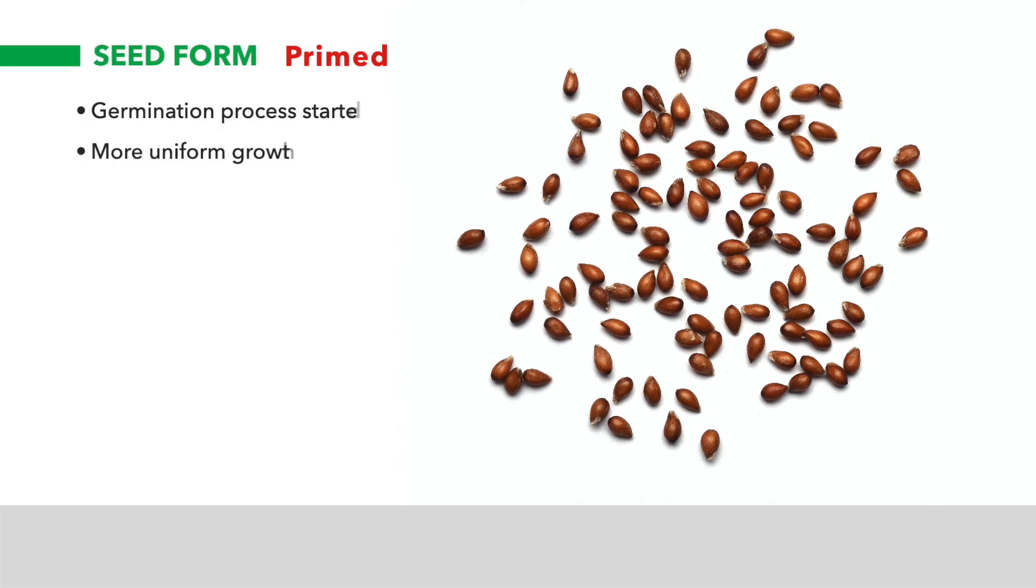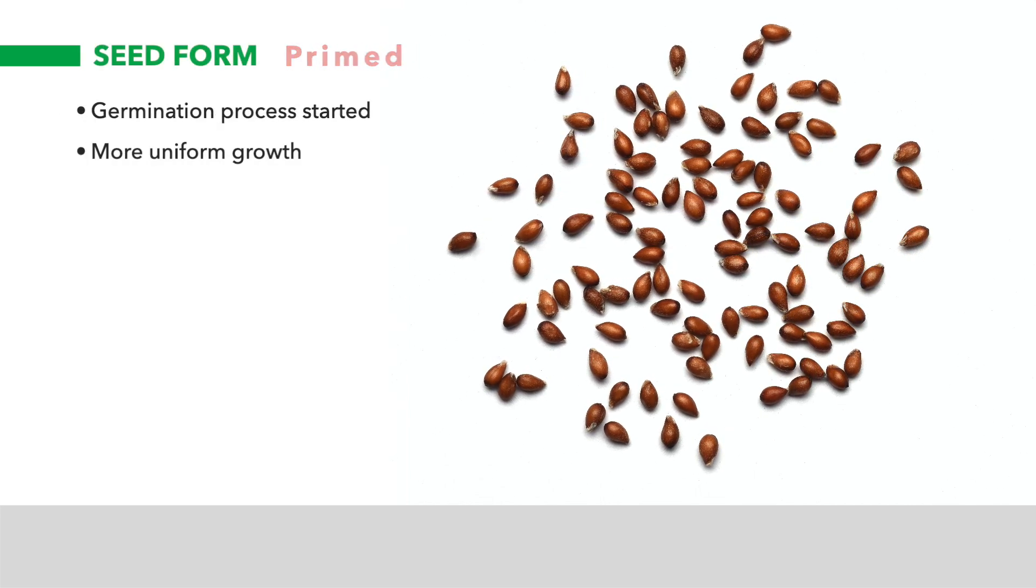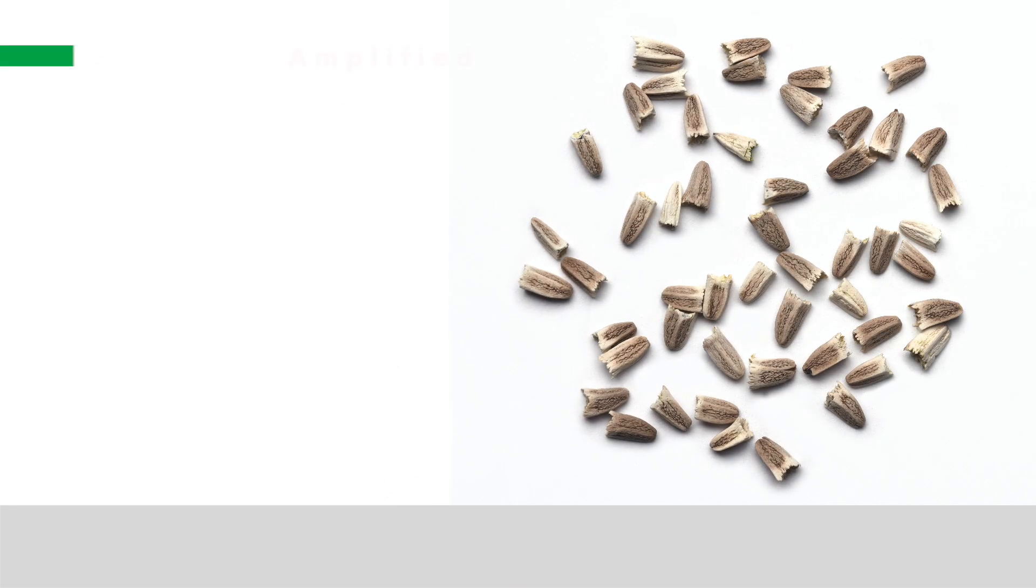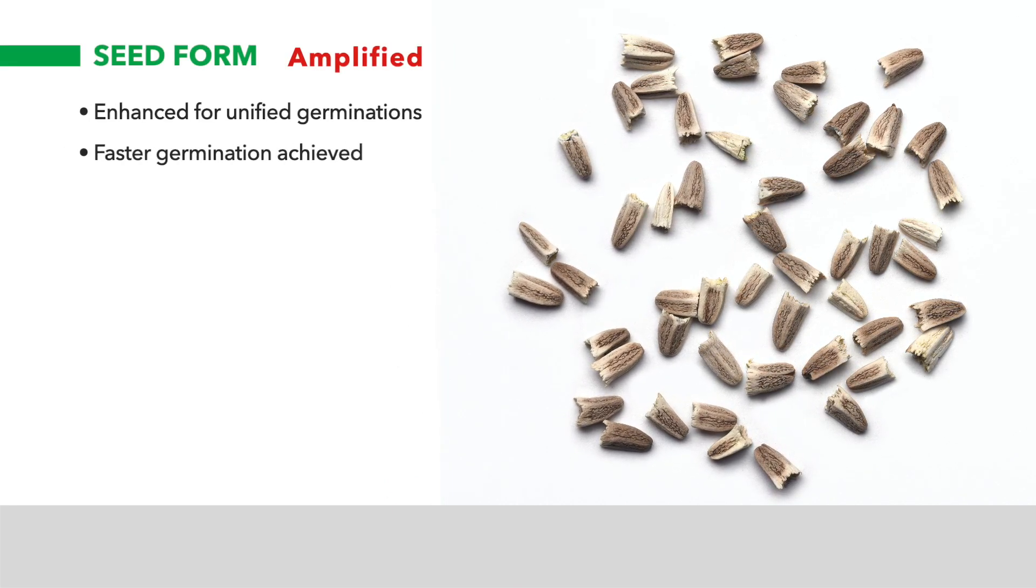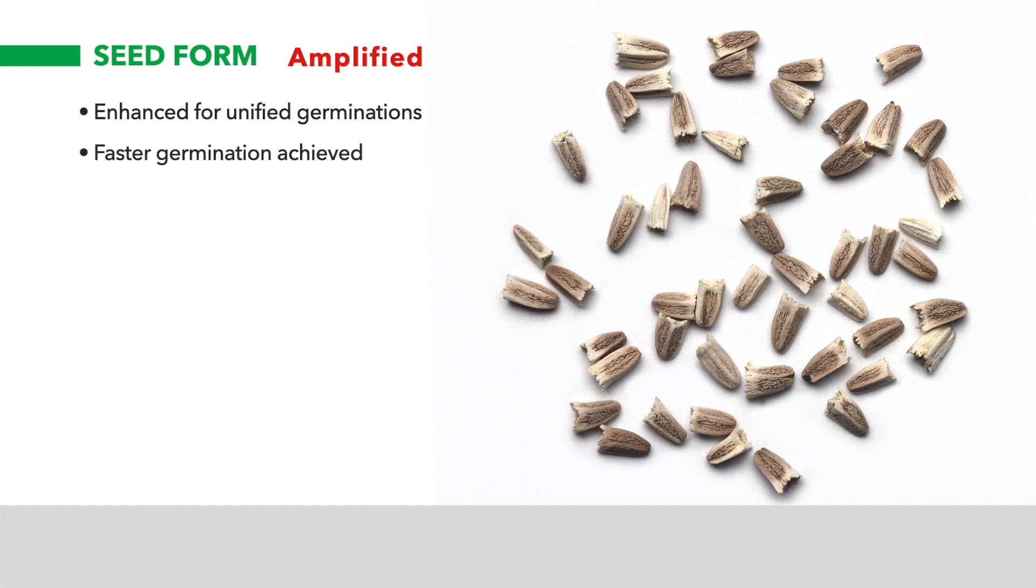Primed seed has the germination process started but is stopped before root protrusion and the seed is then dried down. Through our proprietary process, amplified seed is enhanced for faster and more unified germination compared to non-enhanced seed.